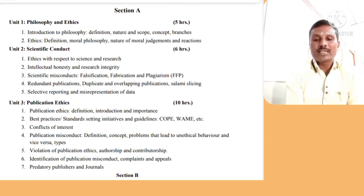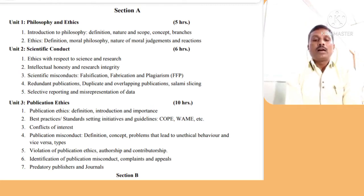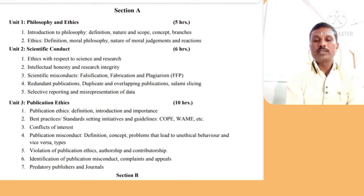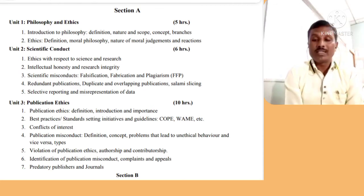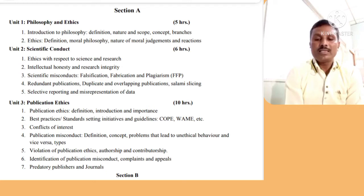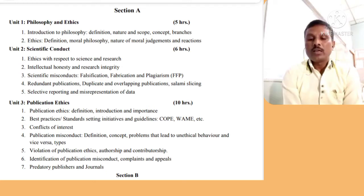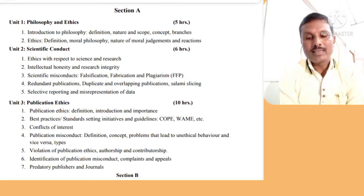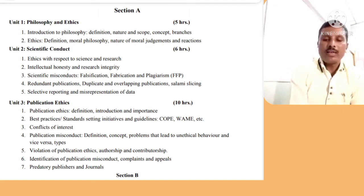In the second unit, Scientific Conduct, which is the most important unit, you study ethics with respect to science and research, intellectual honesty and research integrity, and scientific misconduct — that is FFP: Falsification, Fabrication, and Plagiarism. The fourth part covers redundant publication, duplicate and overlapping publications, and salami slicing. The fifth part covers selective reporting and misrepresentation of data.